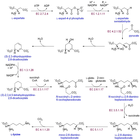Biosynthesis occurs due to a series of chemical reactions. For these reactions to take place, the following elements are necessary. Precursor compounds – these compounds are the starting molecules or substrates in a reaction, and may also be viewed as the reactants in a given chemical process. Chemical energy can be found in the form of high-energy molecules, which are required for energetically unfavorable reactions. Furthermore, the hydrolysis of these compounds drives a reaction forward.